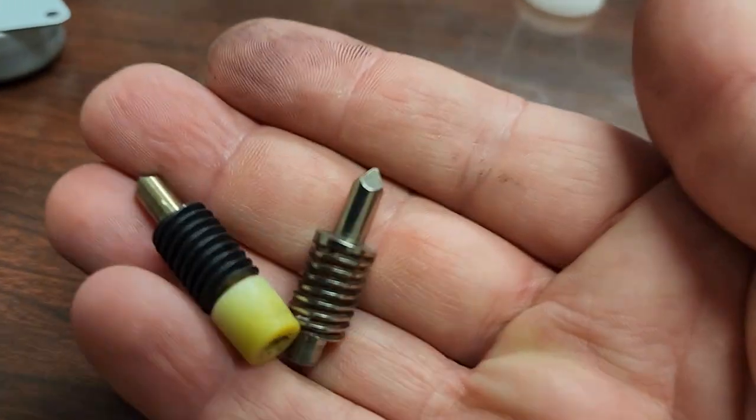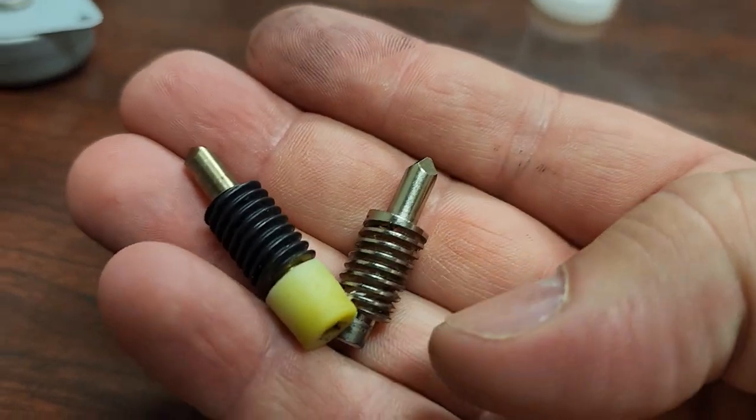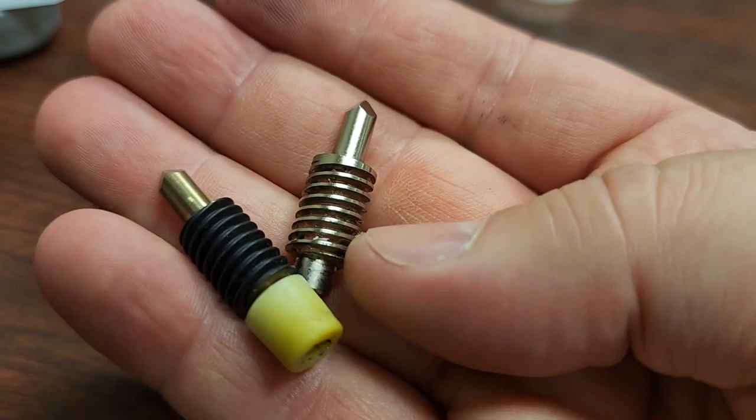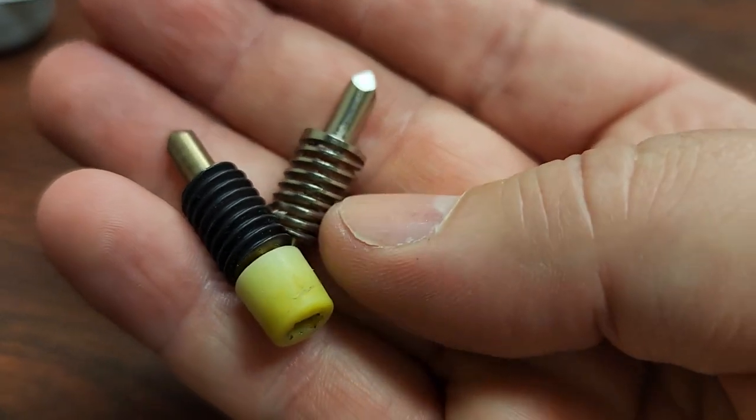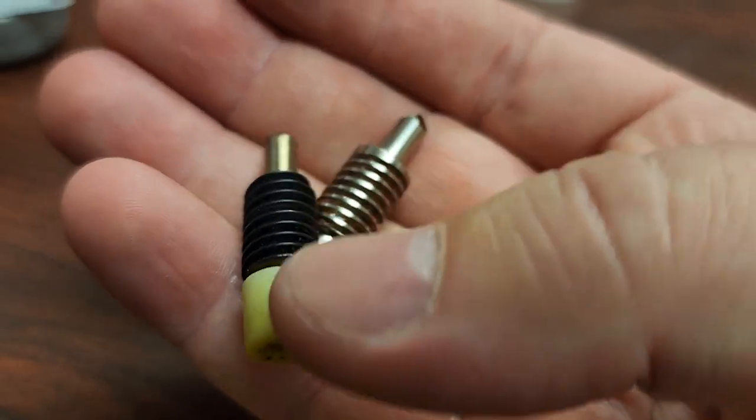And I know that these are two different variants because you can see one of them, this one over here, is like a stainless steel. And it appears to have an acme thread, which is a thread that's got a flat face.